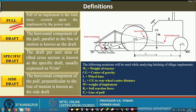The pull of an implement is the total force exerted upon the implement by the power source. Similarly, there is the draft. Now, as we have connected the tractor to this particular implement, we have certain aspects to be considered — for example, what is the line of pull, that means how the point is connected.